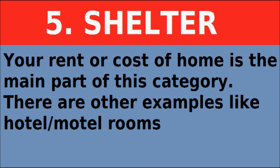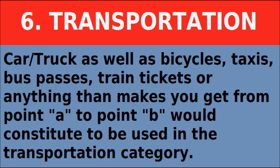Number five is shelter — self-explanatory: your rent or the cost of your home, and other examples like hotel and motel rooms. Number six is transportation: your car, truck, maybe a bicycle, taxi fees, bus passes, train tickets — anything that gets you from point A to point B.